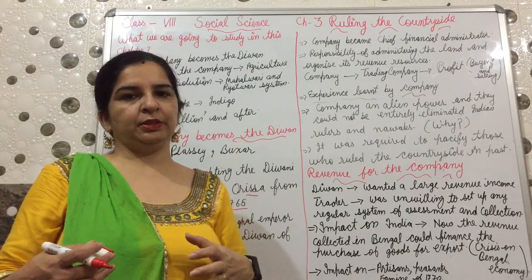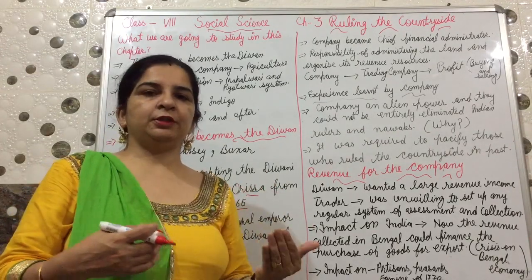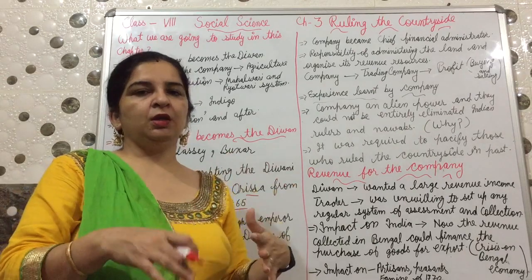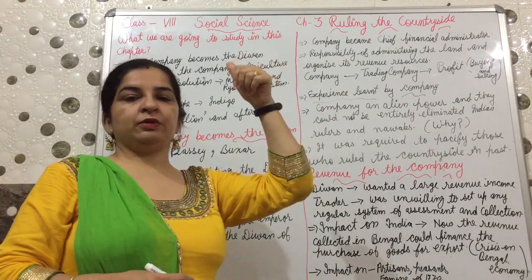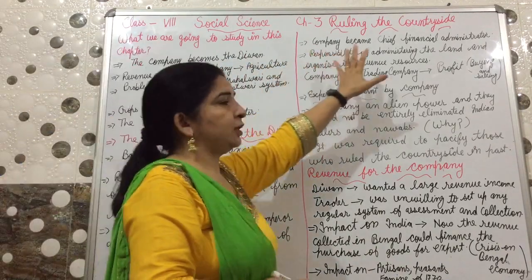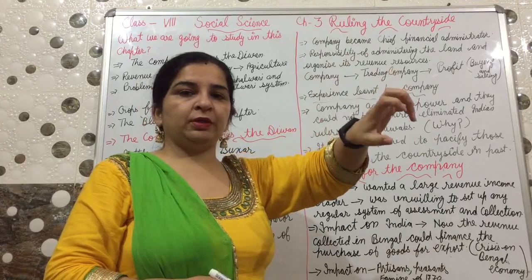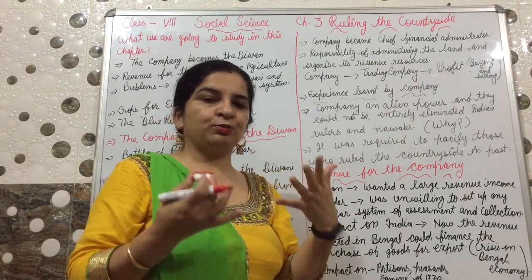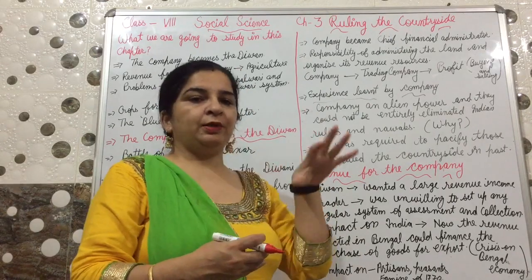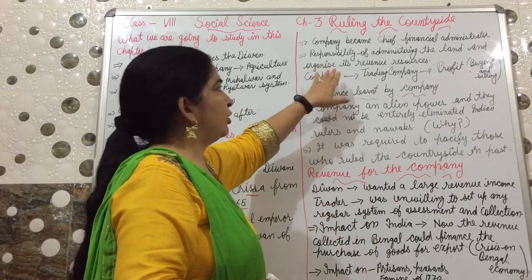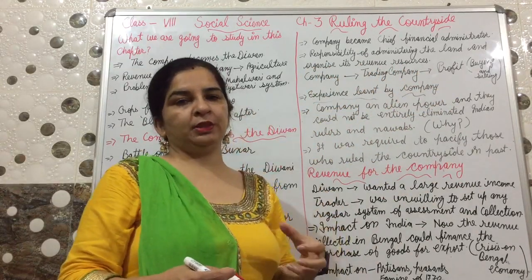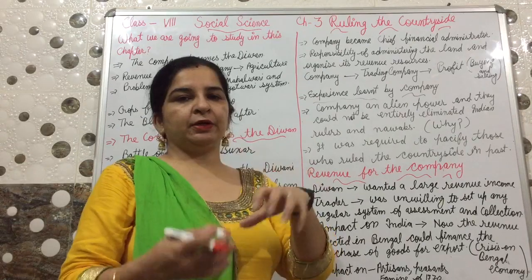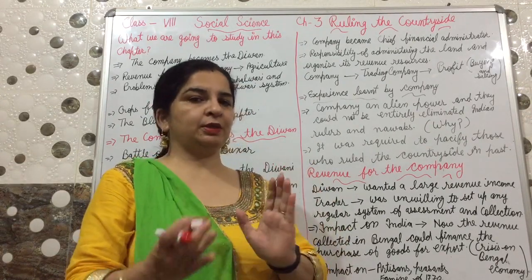For example, suppose our government takes taxes — we pay taxes — but our government provides health facilities, education facilities, roadways, transport, etc., investing for the welfare of the public. In the same way, Indian rulers had the responsibility of administrating the land and organizing its revenue resources. The revenue resources came from agriculture — from farming — through taxes. How to arrange the land, divide the land, and work for the people was all the responsibility of those rulers, but now all that responsibility came to the company.